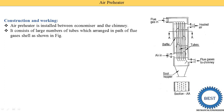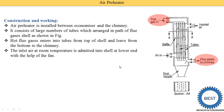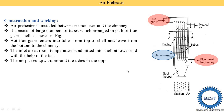The flue gases pass inside the tubes and are exhausted from the other side. The air supplied passes outside the tubes. Hot flue gases enter the tubes from the top and leave from the bottom toward the chimney. The inlet air at room temperature is admitted into the cell at the lower end with the help of a fan.